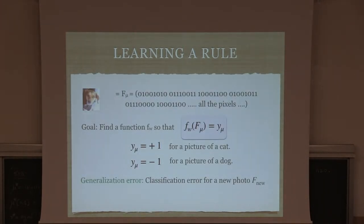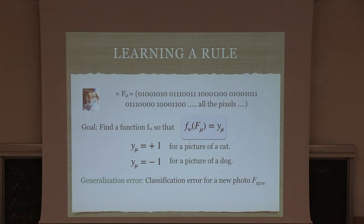What about for computers? A computer sees a picture of a dog or a cat as a long series of zeros and ones that represent the pixelization of the figure. This task corresponds to finding a function f_w, where w are some parameters, such that if we plug in this long sequence of zeros and ones it outputs plus one for a cat and minus one for a dog.